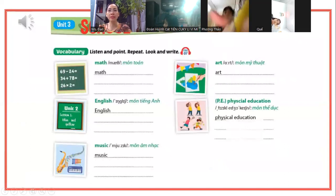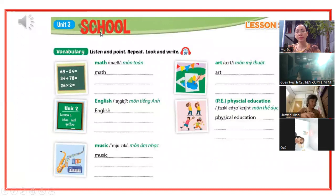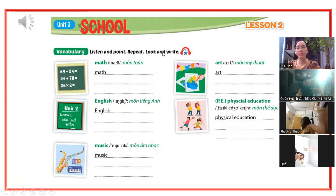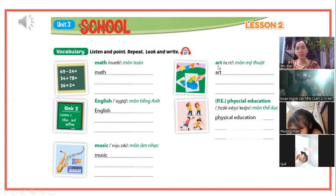Rồi qua phần tiếp theo. Unit 3, School. Lesson 2, A. 1. Listen and point. Repeat. 1. Math. 2. English. 3. Art. 4. PE - Physical Education.